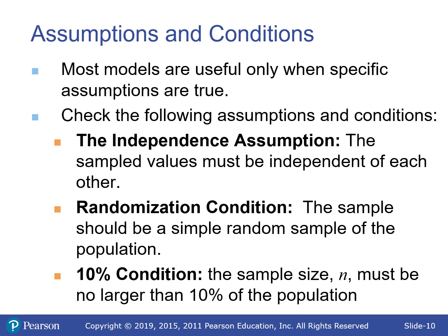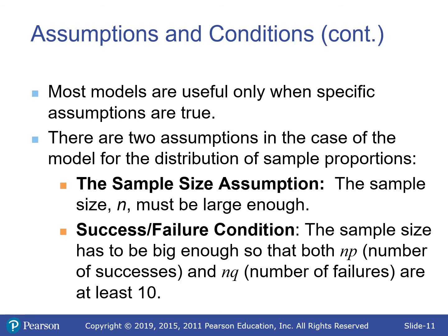The 10% condition sounds odd since bigger samples are better. What happens is that when your sample size approaches the population, the standard deviation calculation breaks down. If you had the entire population — a census — there would be no standard deviation; that would be the true proportion. So when the sample gets too large relative to the population, the variation formulas break down.